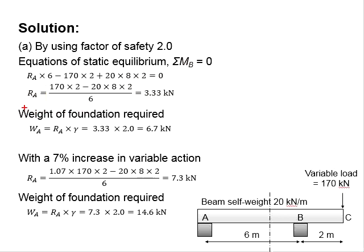Next, you determine the weight of the foundation required. The working load needs to be multiplied with the factor of safety of 2.0, which gives you a minimum weight of Wa to be 6.7 kN.